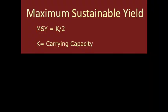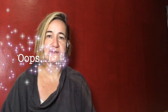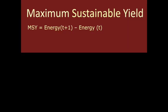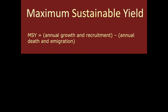MSY — maximum sustainable yield — is K (carrying capacity) divided by 2. We can think about some other ways to calculate carrying capacity. For example, using ways we have to measure populations: total biomass at time plus one — so how much biomass we have a year from now — minus what our biomass is now. Or the amount of energy contained within that population a year from now minus current time. Or maybe just how much it grows — how much has your tree grown, so it's producing more mangoes or you're harvesting wood from it — and then that amount minus how much you have at the moment.